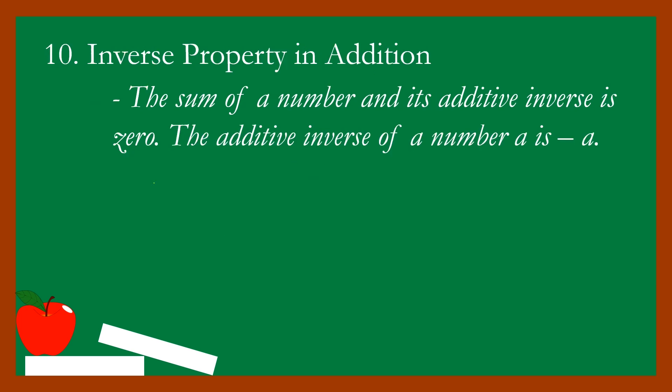Property number ten: the inverse property of addition. The sum of a number and its additive inverse is zero. The additive inverse of a number a is negative a, so the notation is: a plus negative a equals zero. For example, seven plus negative seven equals zero. The additive inverse of forty is negative forty, so forty plus negative forty equals zero.